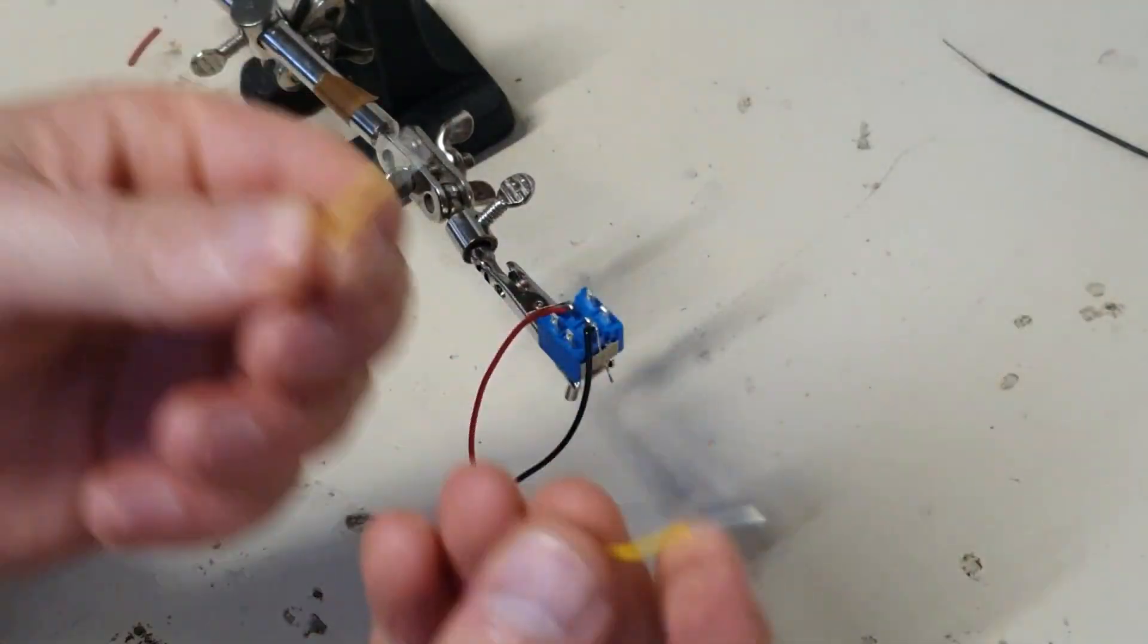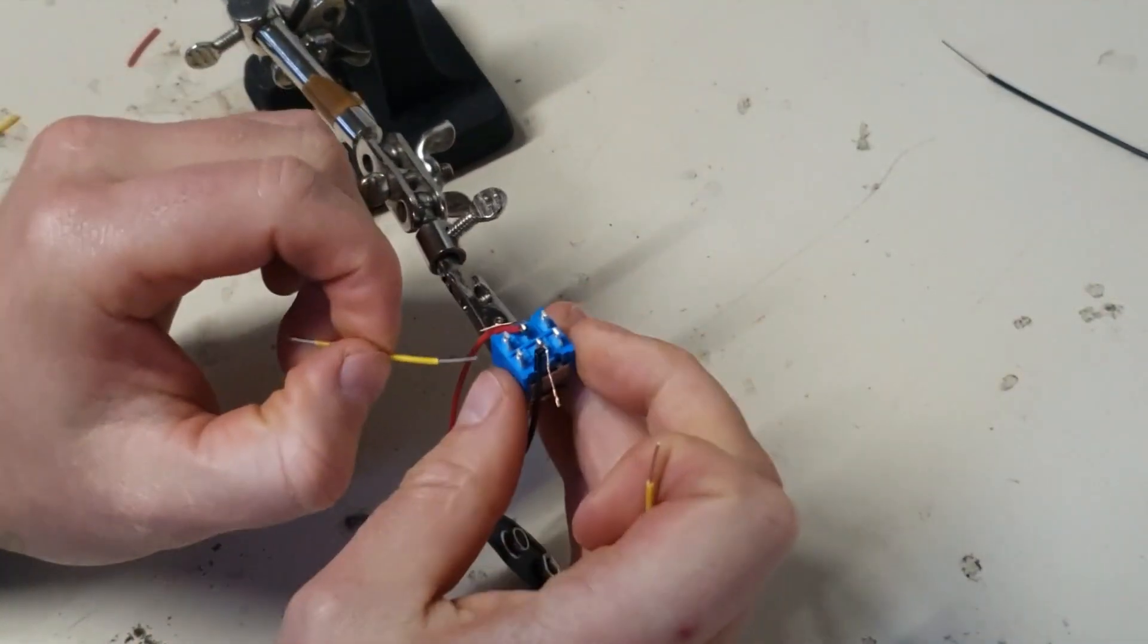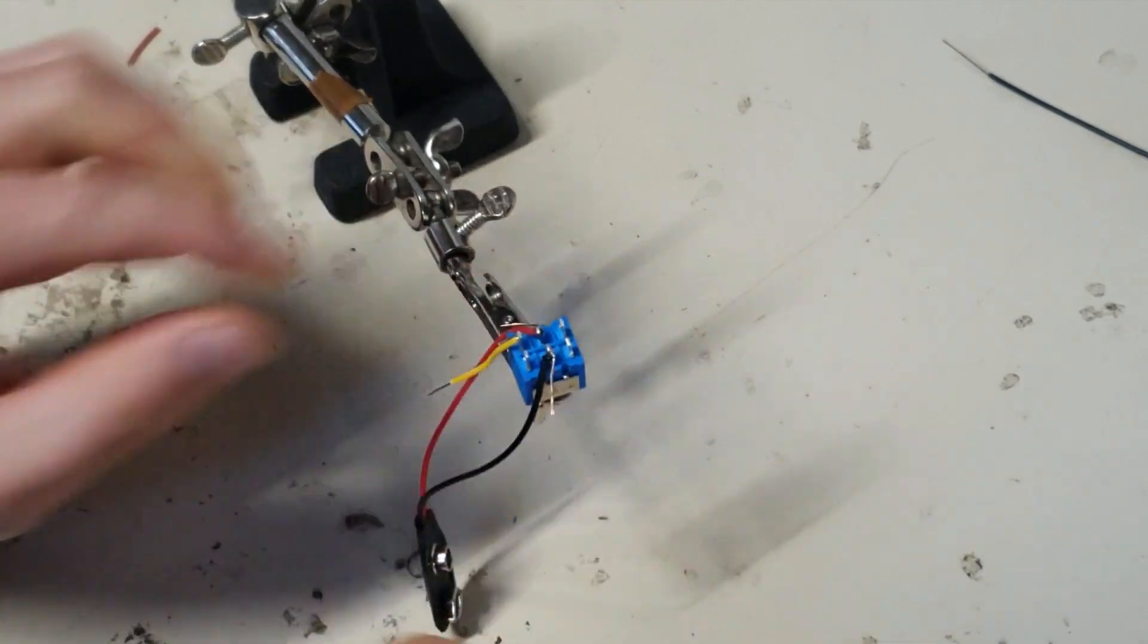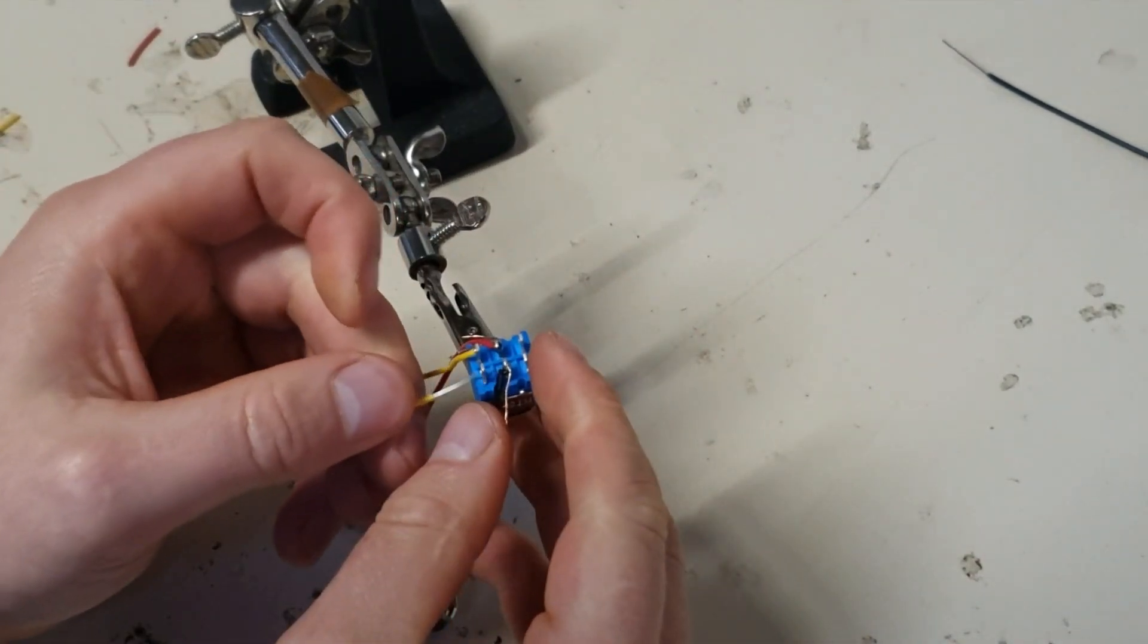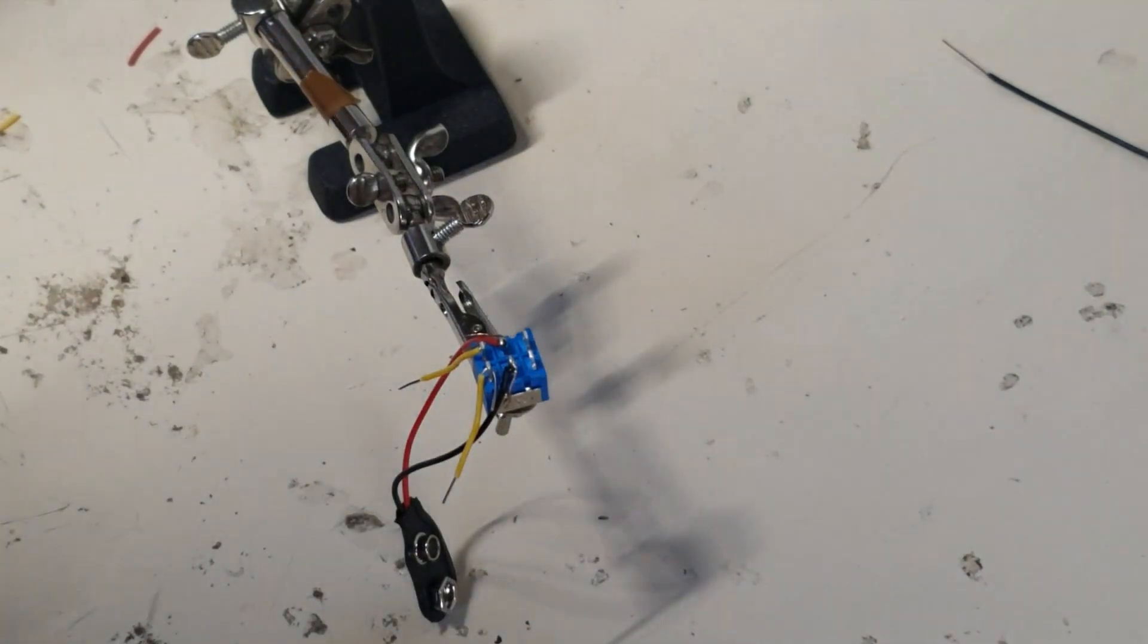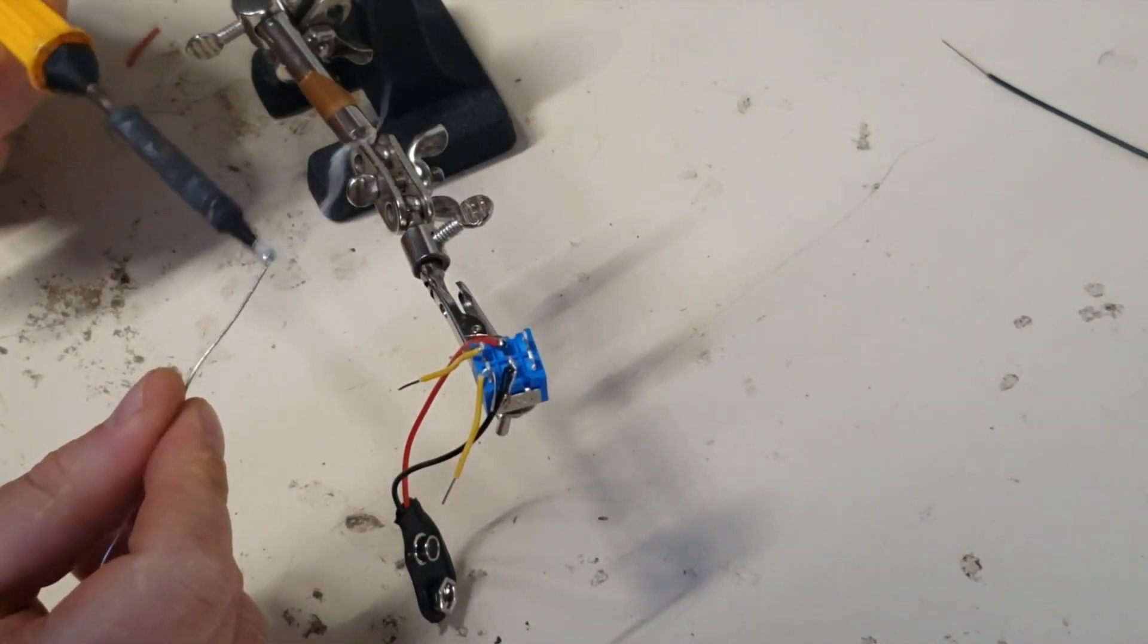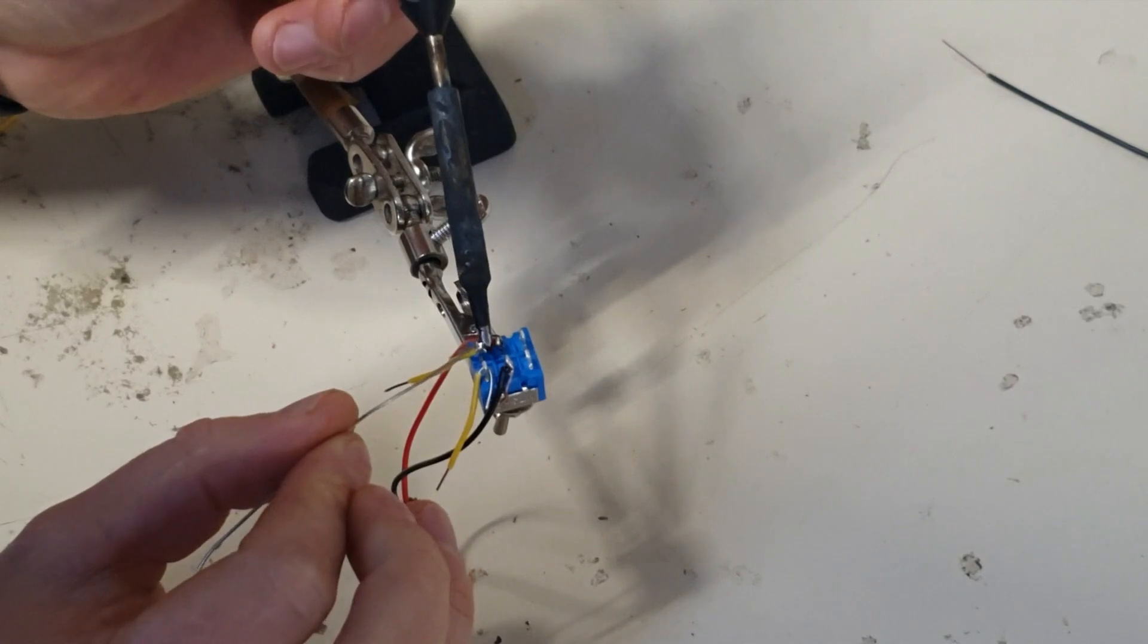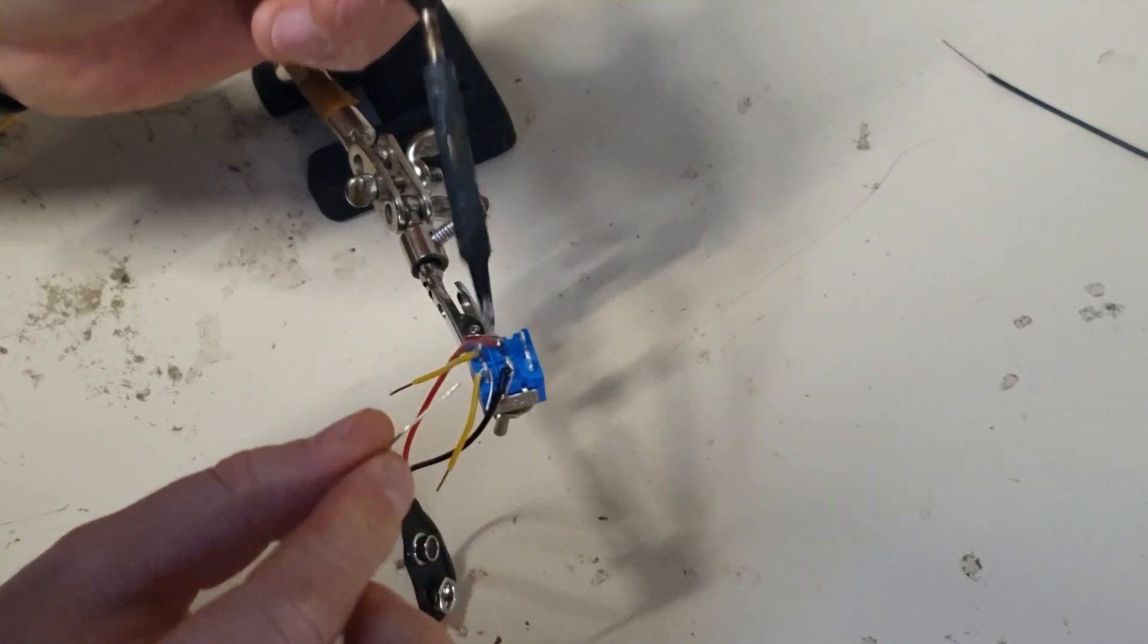The next step then is get the two small yellow wires. And I just place them on one side here. Like this. Again, feeding in both the solder and the soldering iron.